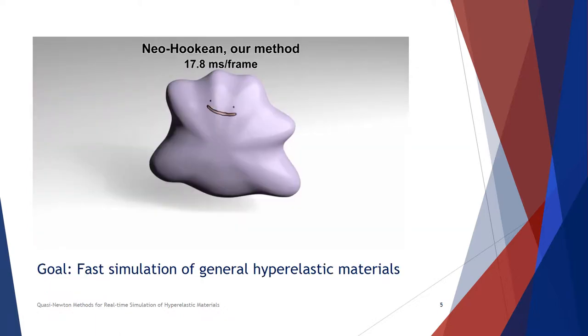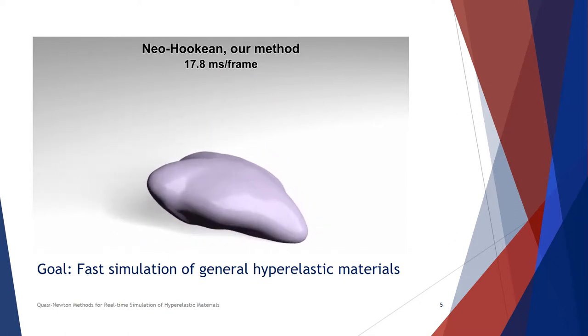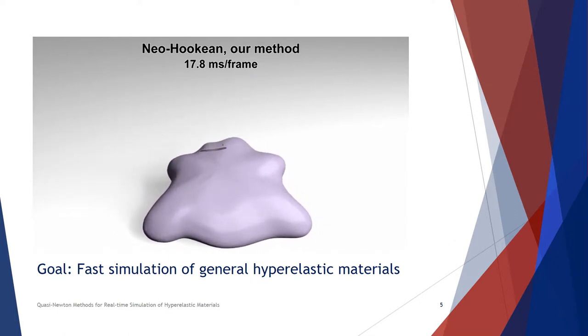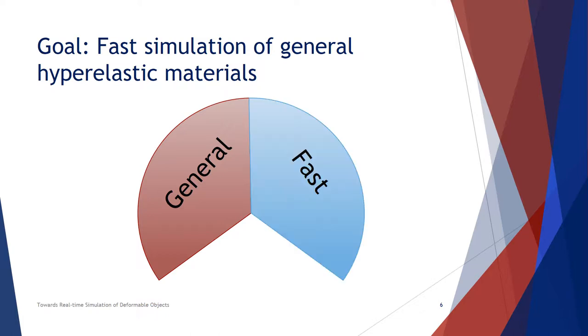The goal of this project is to simulate a variety of hyperelastic materials, such as Neohookean, or STVK, or even some user-defined materials in real-time. To be more specific, the method needs to be general to support an arbitrary material, it needs to be fast to give real-time response, and it is better to be simple to make the implementation fast and less likely to cause bugs.